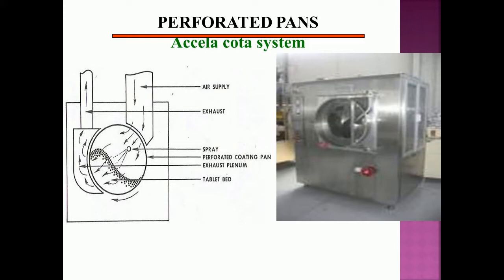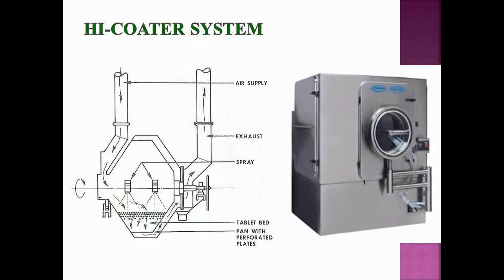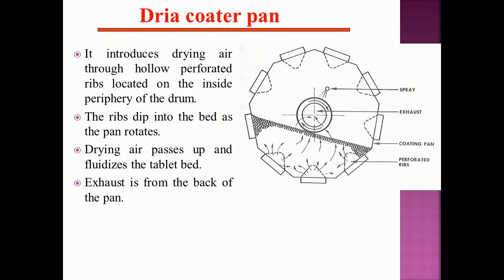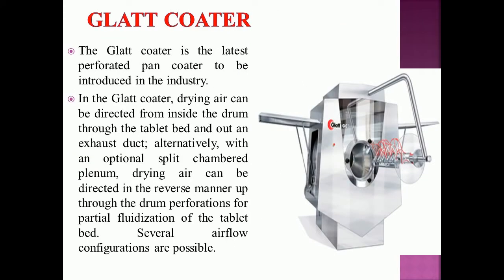The Axle coater and Hi-coater systems introduce drying air through hollow perforated ribs located on the inside periphery of the drum. The ribs dip into the bed as the pan rotates, and drying air passes up and fluidizes the tablet bed. Exhaust is from the back of the pan. The Glatt coater is the latest perforated pan coater introduced in the industry. In the Glatt coater, drying air can be directed from inside the drum through the tablet bed and out an exhaust duct. Alternatively, with an optional split-chambered plenum, drying air can be directed in reverse through the drum perforations for partial fluidization of the tablet bed. Several airflow configurations are possible.